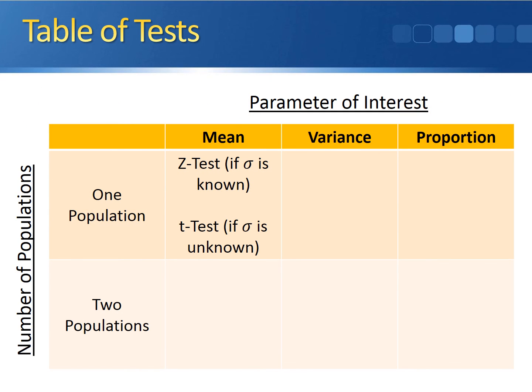To finish things off, let's fill in another cell in our table. For this test, we were working with a single population, and the parameter of interest was the variance. So we'll place the chi-squared test for a population variance in the row with one population, and in the column where the parameter of interest is the variance.